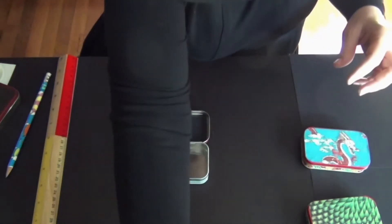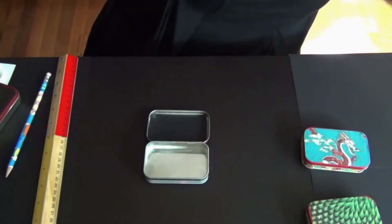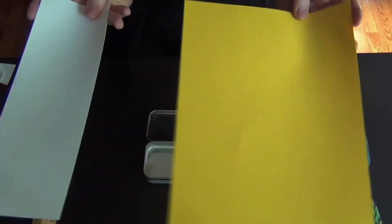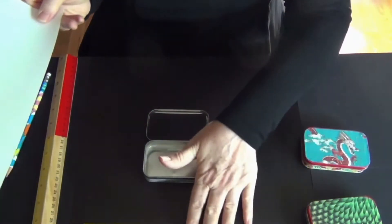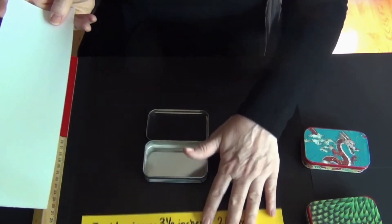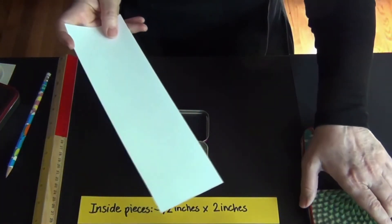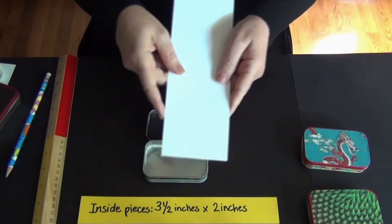Now we're going to, we took, for this, I just took an 8 1⁄2 by 11 cardstock and trimmed it, like I said, for the inside piece is 3 1⁄2 by 2 inches. So we trimmed that. This is what this is. This is 3 1⁄2.